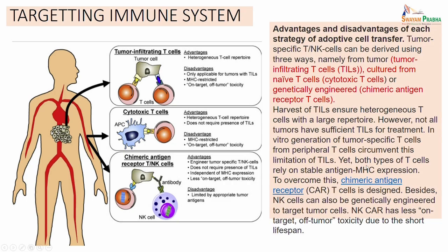Therefore, both types of T cells rely on the stable antigen MHC expression. It is very important to have a tumor antigen which will be used by these T cells. To overcome this, the chimeric antigen receptor, called as the CAR T cells, are designed. Similar to CAR T cells, you also have the NK cells. These NK cells can also be genetically engineered to target the tumor cells.